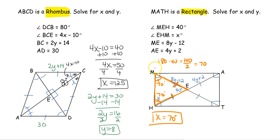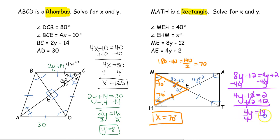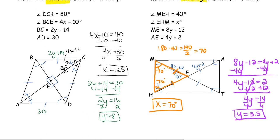For y, the diagonals are congruent and bisect each other, giving four congruent pieces. So 8y minus 12 equals 4y plus 2. Moving the smaller variable: 4y minus 12 equals 2. Adding 12: 4y equals 14. Dividing by 4: y equals 3.5.